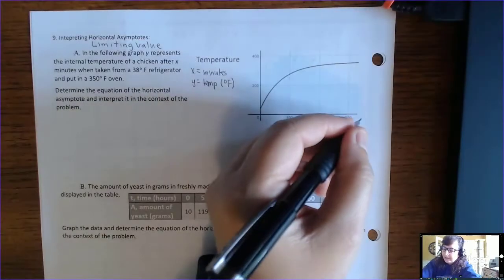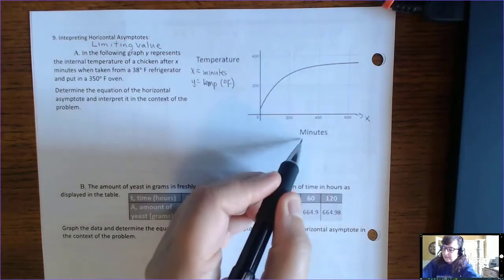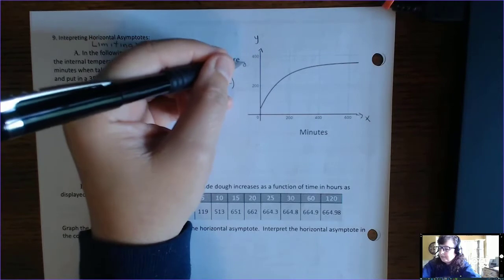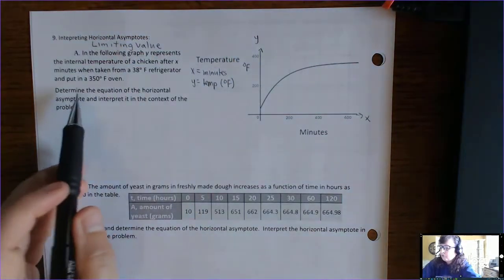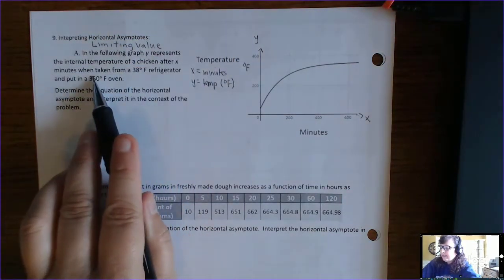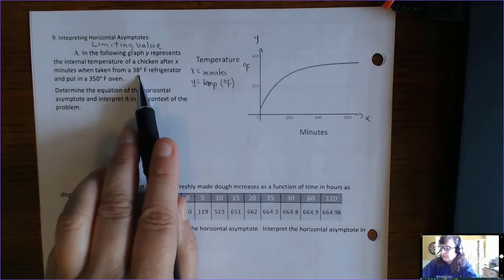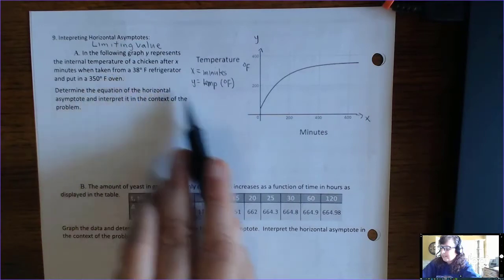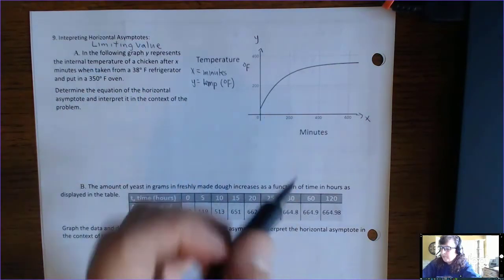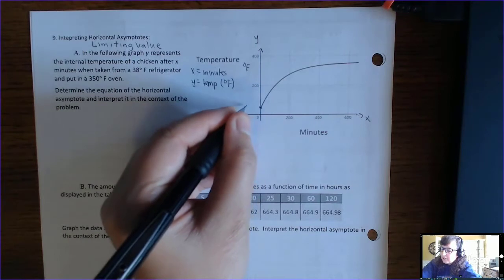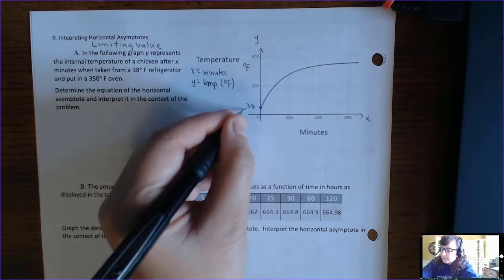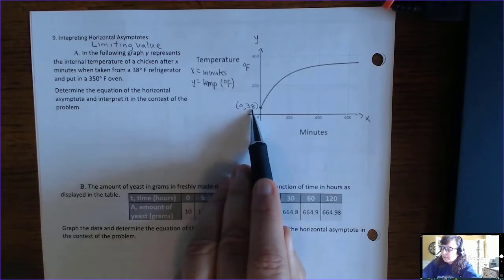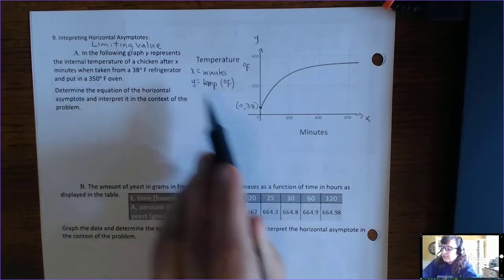You can see this in the graph: the x-axis is in minutes and the y-axis is in degrees Fahrenheit. Since the chicken is taken from a 38-degree refrigerator, at zero minutes the temperature equals the refrigerator temperature. So the y-intercept is the point (0, 38), meaning at zero minutes the chicken's temperature is 38°F.